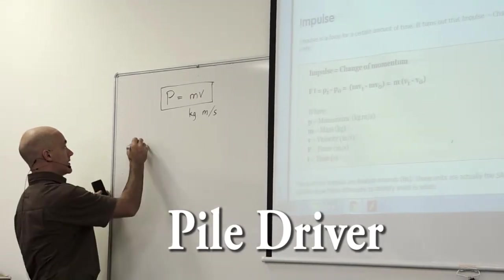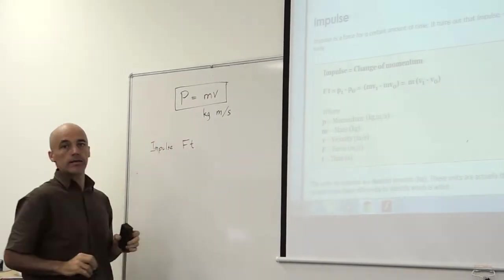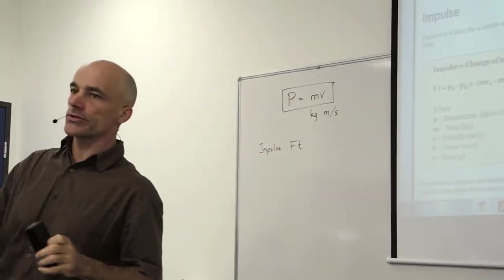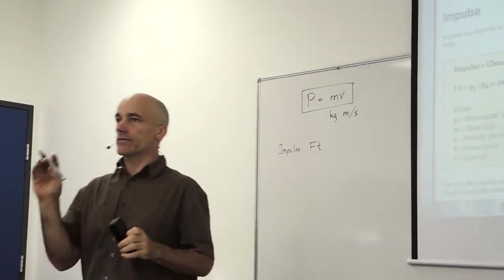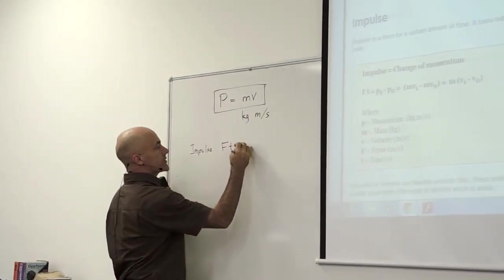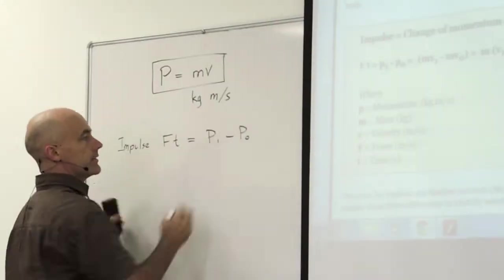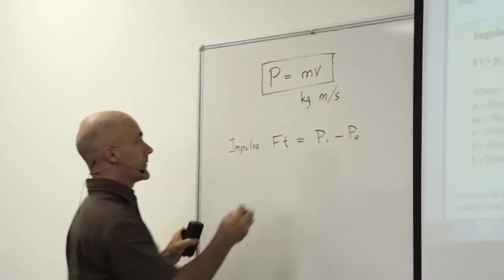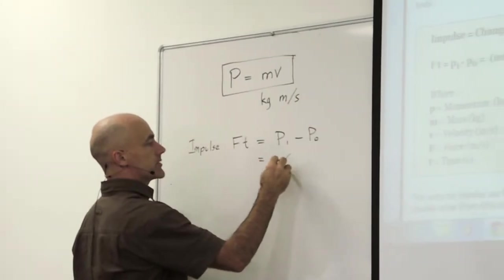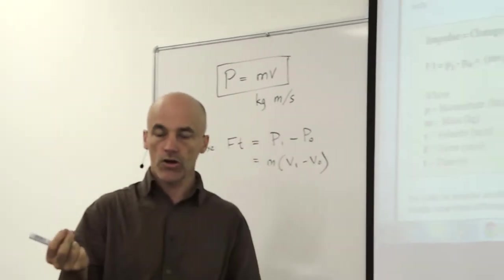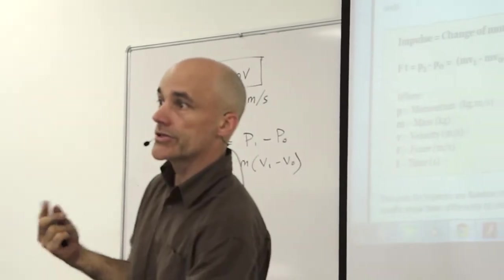We've got another thing called impulse. Impulse is force times time, the amount of push that you get from something. It's the amount of force times the amount of time, and that equals the change of momentum. What was the momentum at the end? Subtract the momentum at the beginning. It equals your mass times your change of velocity. So the amount of pushing times the amount of time equals your change of momentum.